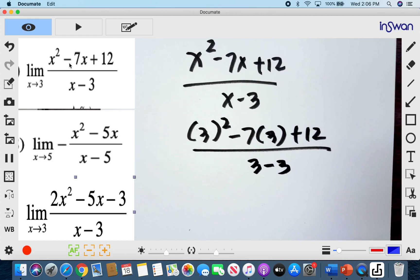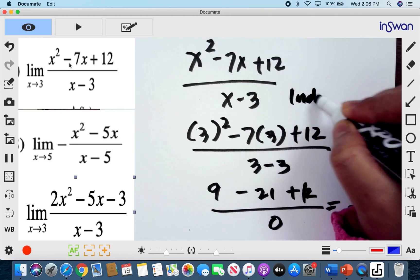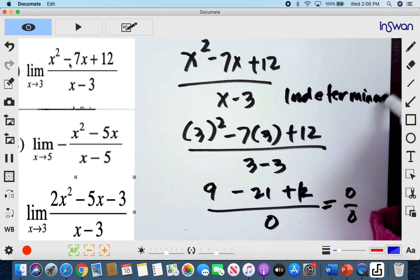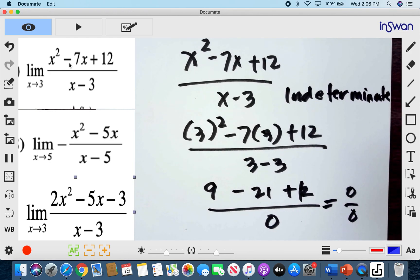And so you have here now is 9 minus 21 plus 12 all over 0. So this one is actually 0 over 0. We call this situation as indeterminate when you have 0 divided by 0. That means this expression is still factorable so that we can cancel out expressions.